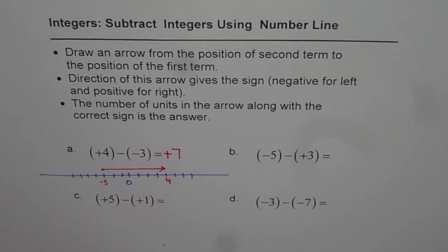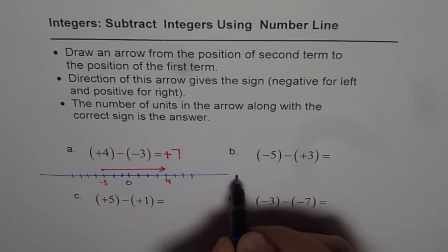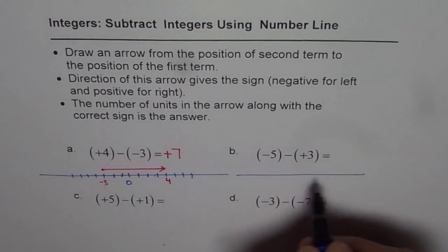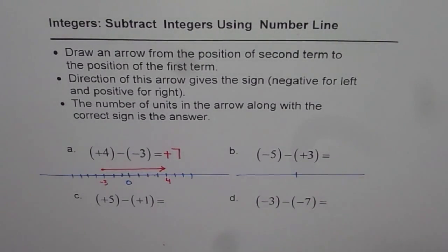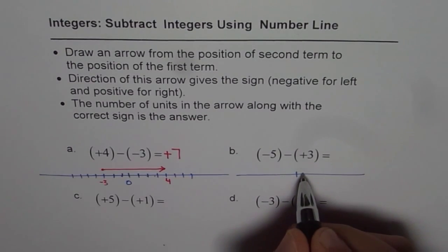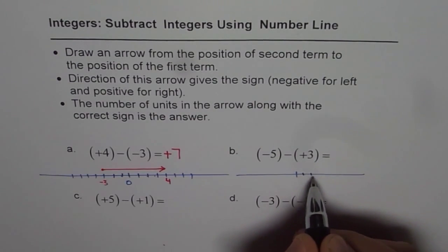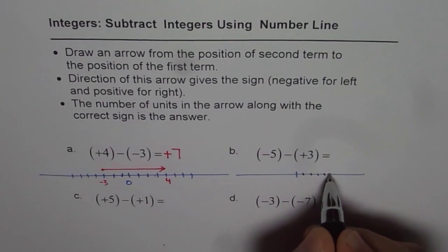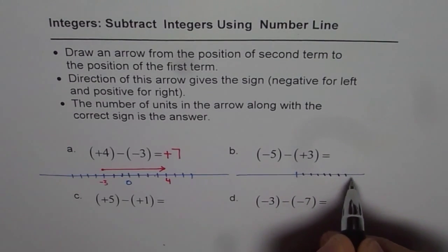Do you get it? Let's do one more question. This time it is minus five and plus three. Let me draw a new number line: one, two, three, four, five, six, seven, eight on each side.